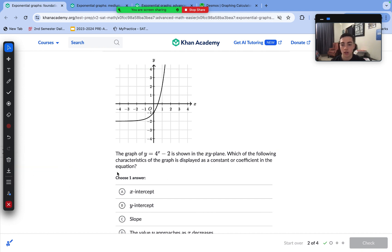We have another equation, this time a little bit of a different format, as we have a vertical shift down two units. Which of the following characteristics of the graph is displayed as a constant or coefficient in the equation? Here we are given the numbers 4 and negative 2. We can see the x-intercept is 0.5, that's not shown. Y-intercept is negative 1, which is not shown.